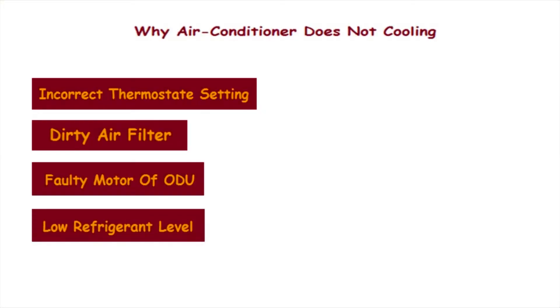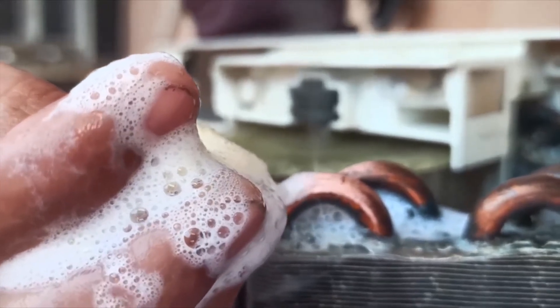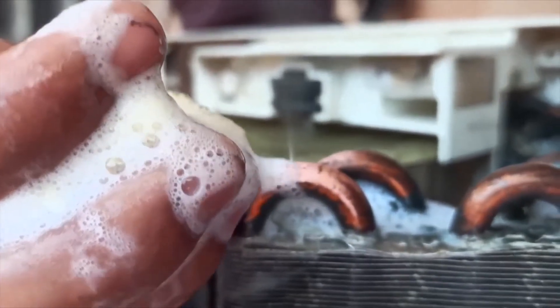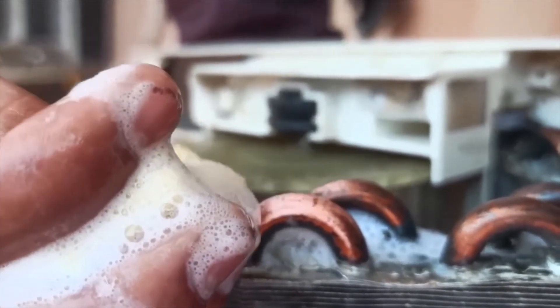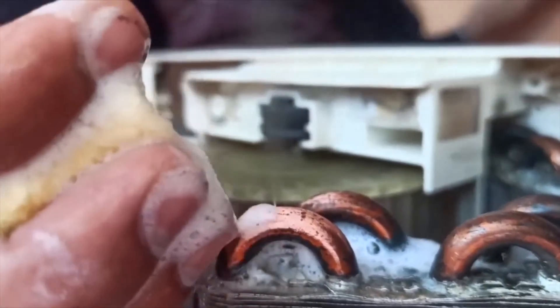The fourth reason may be low refrigerant level. A refrigerant is an important fluid that absorbs heat from the surrounding air. The absence or insufficiency of refrigerant might lead to your AC not cooling. If your AC system is not cooling, it might be because the refrigerant is leaking. Get your AC serviced at regular intervals to ward off this problem.